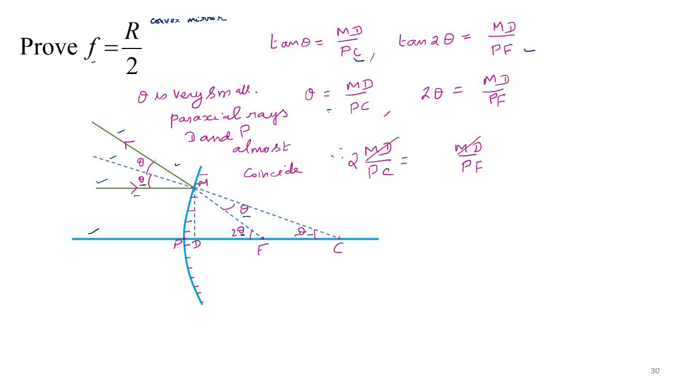MD cancels. So 2 PF is equal to PC on cross multiplying. So 2F is equal to R, radius of curvature.